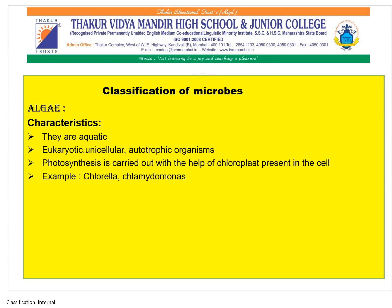Algae are aquatic, eukaryotic, unicellular, autotrophic organisms. Photosynthesis is carried out with the help of chloroplasts present in the cell. Photosynthesis is the process by which plants produce their own food with the help of sunlight, water, carbon dioxide, and chlorophyll. Examples of algae are Chlorella and Chlamydomonas.